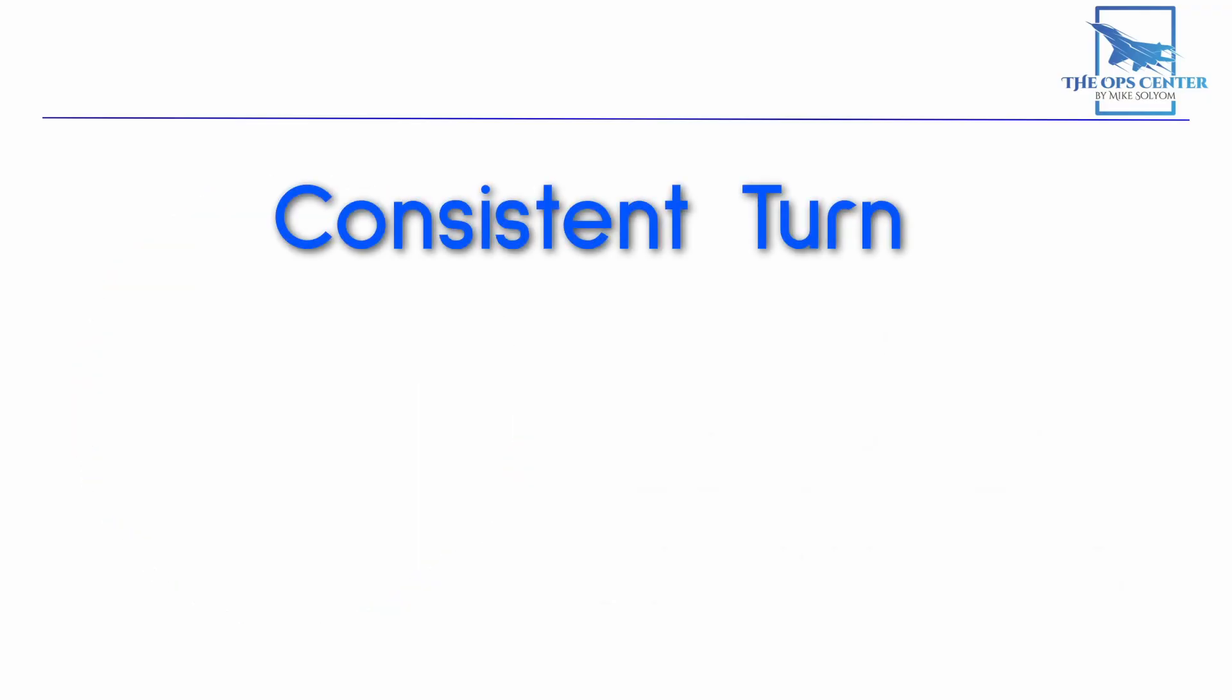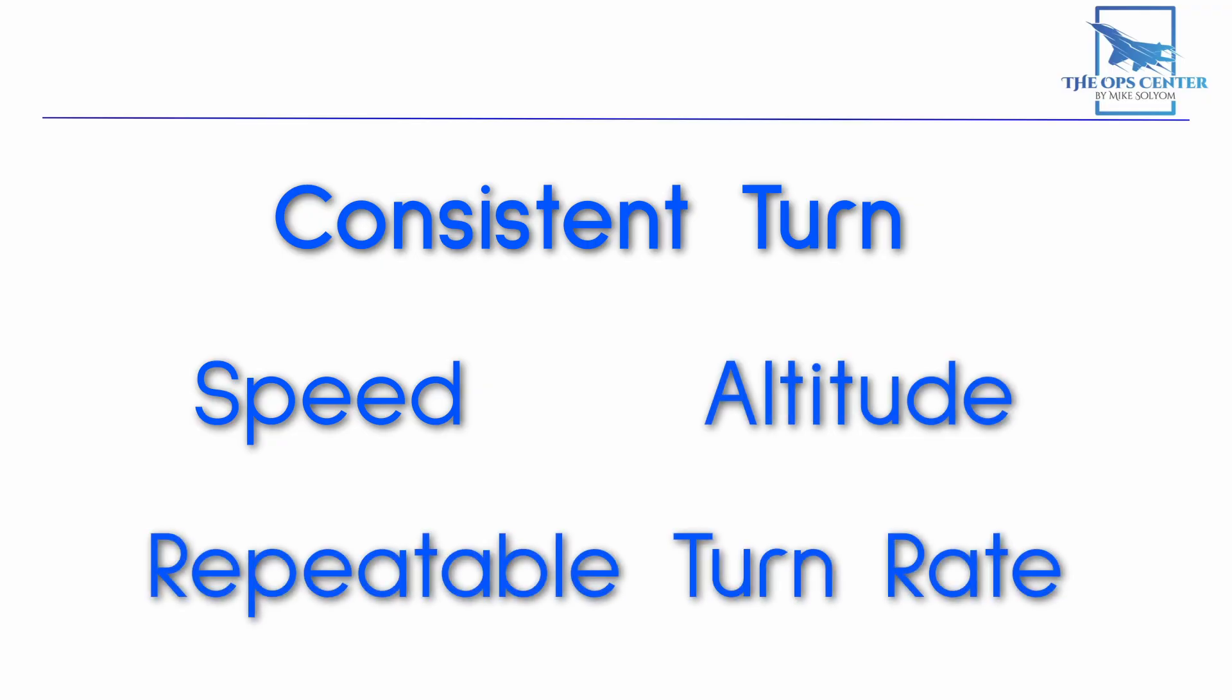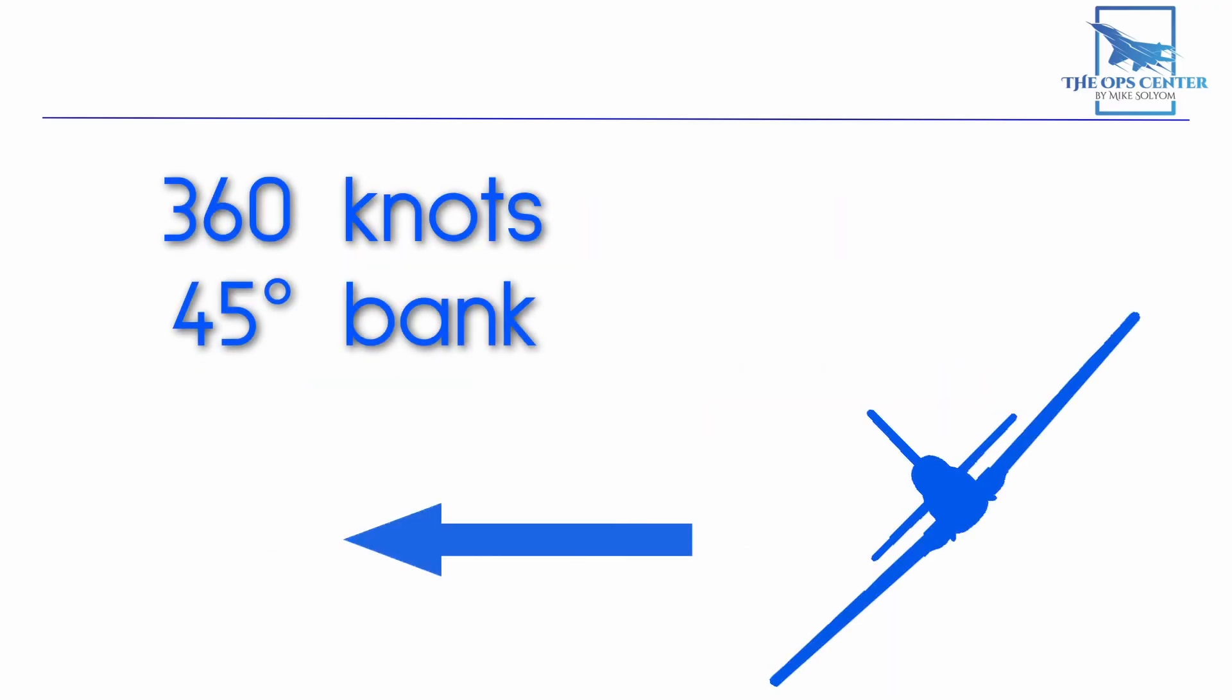Right now, we want to learn how to make a consistent turn that maintains not just speed and altitude, but also a repeatable turn rate. So let's go over how professional pilots do that. If you make a level turn at 360 knots with the aircraft banked at 45 degrees, then it will take two minutes to make a 360 degree turn, or one minute to do a 180.